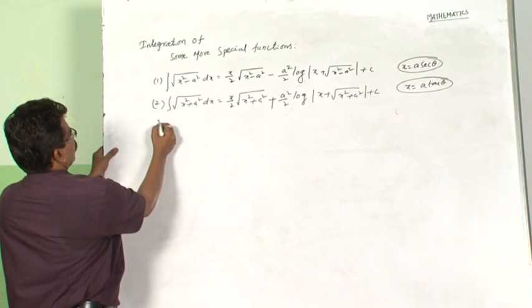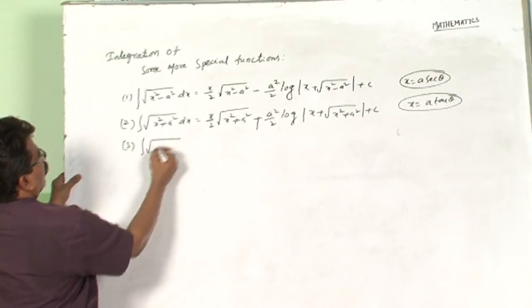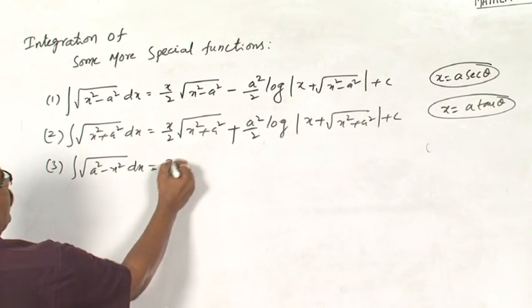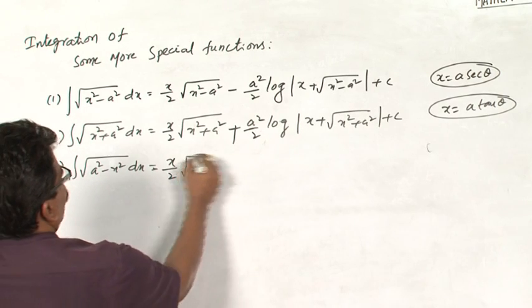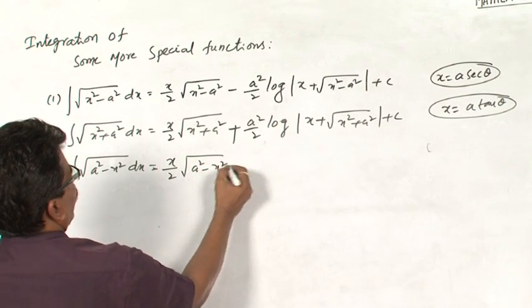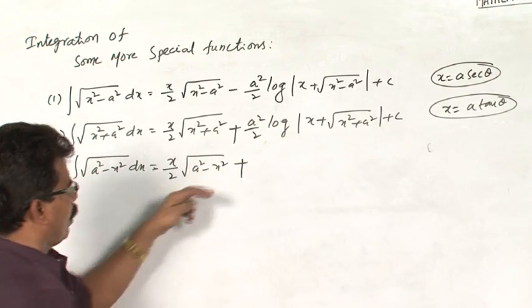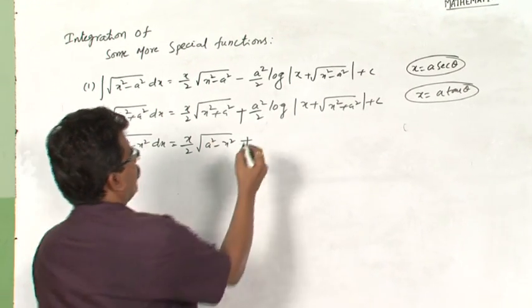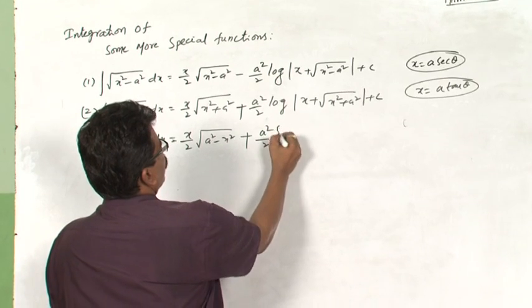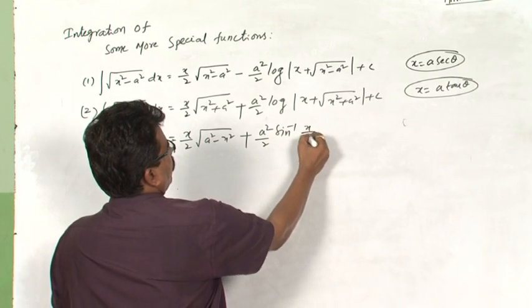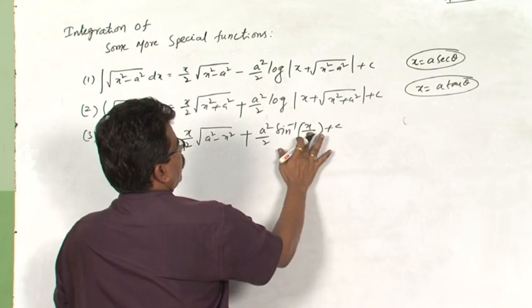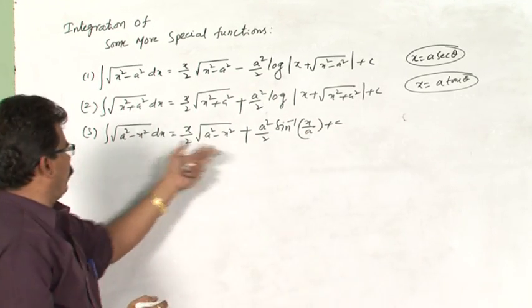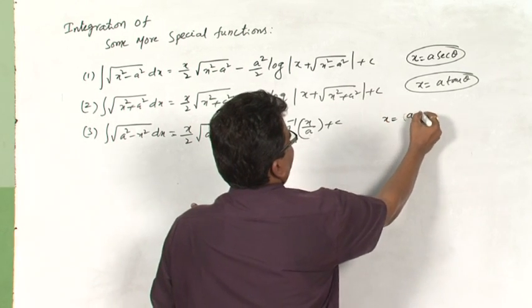The third one is integral root of a square minus x square dx. The formula for this is: x by 2 times root of a square minus x square. Just recall — in this formula you have plus, while in the first two you also have plus but with different terms. That is: a square by 2 times sin inverse x by a plus c. To derive this formula, we take x equal to a sin theta.